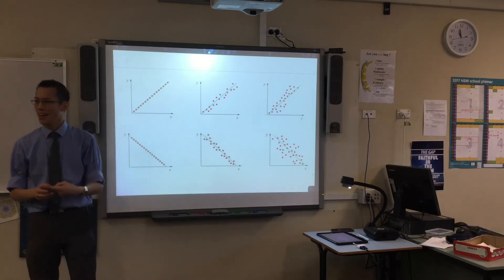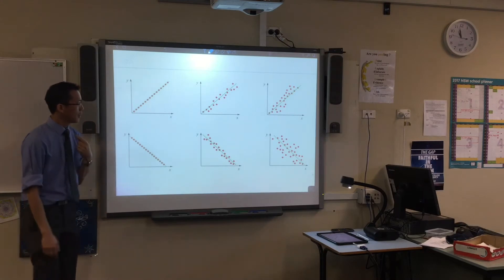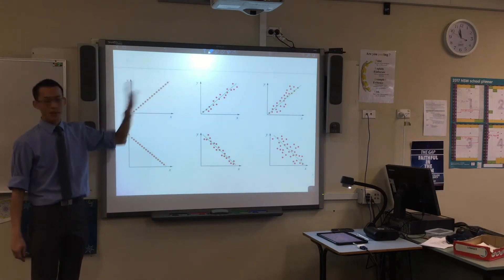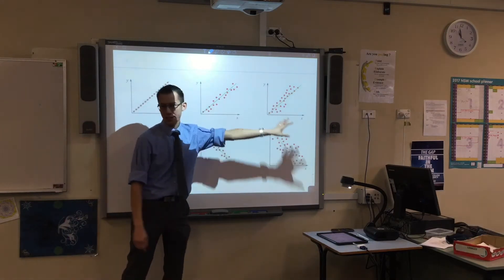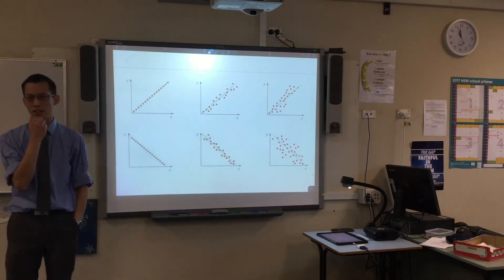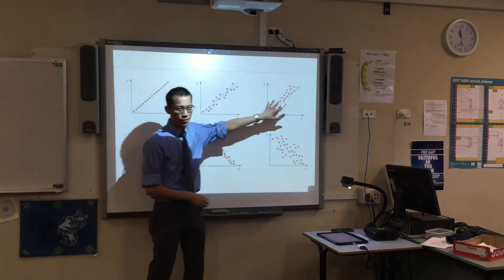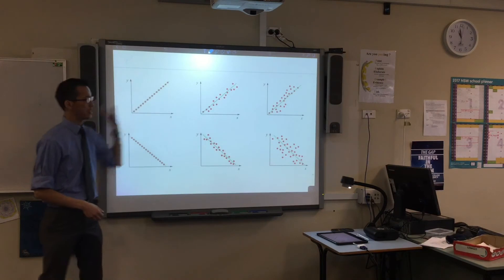So I'll call it the line of best fit for now because I think that's the most descriptive name. Every time you've got the data, you've got the line. You've got the data, you've got the line. Let's have a look at this top row. You can see as you go from left to right the line of best fit doesn't change but the data changes around it.